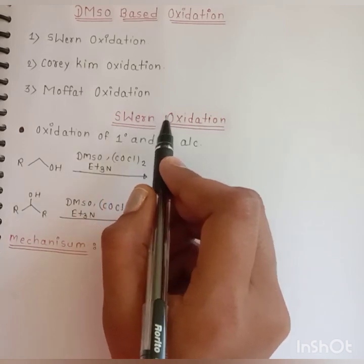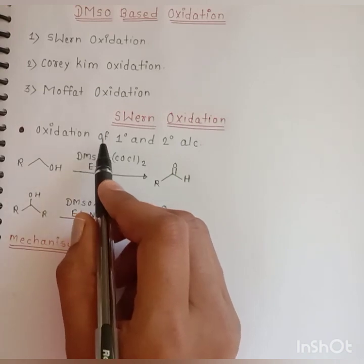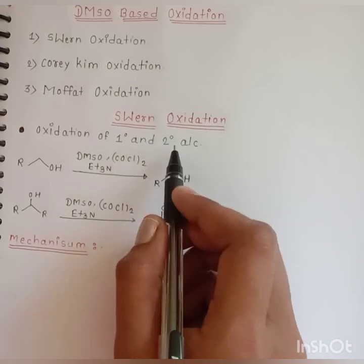The Swern oxidation is specific for the oxidation of primary and secondary alcohols.